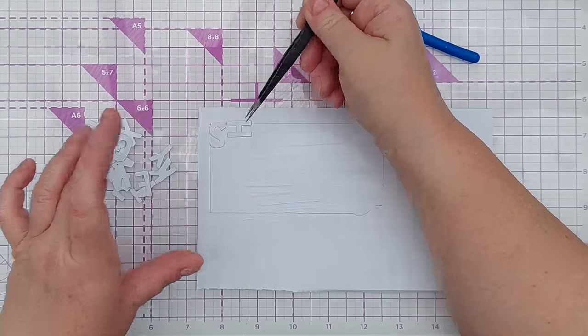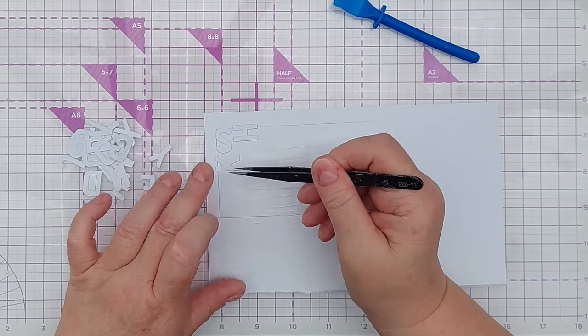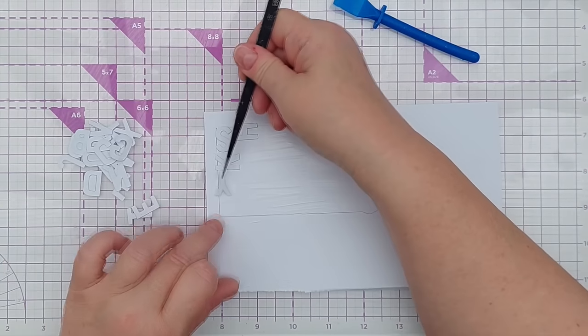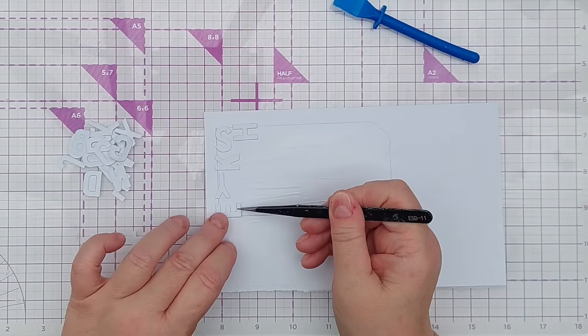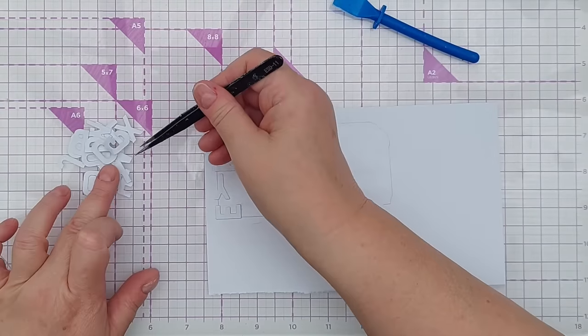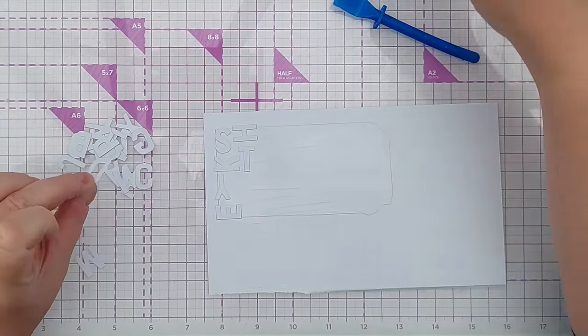And now I'm going to stick my letters on in a random but grid-like formation, overlapping the lines slightly. So when I cut my tag out I'm going to have partial letters coming in from the side. I might need to cut some more letters if I can't quite fill the whole tag.